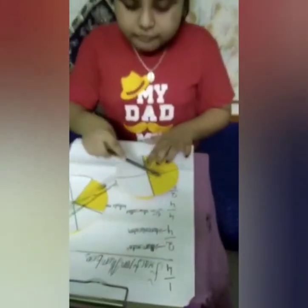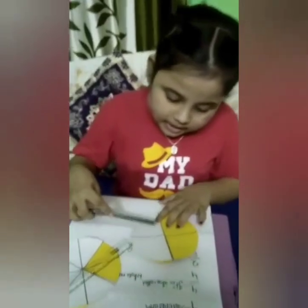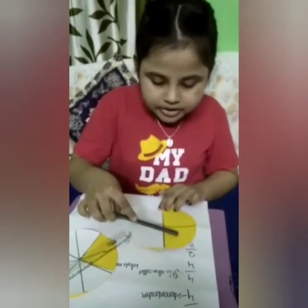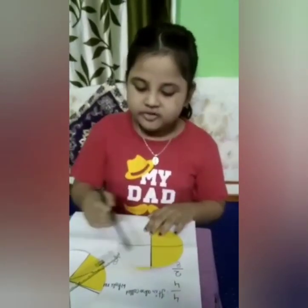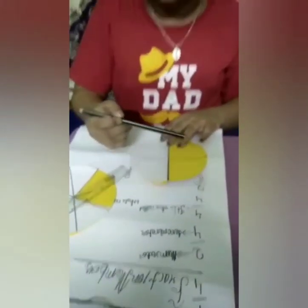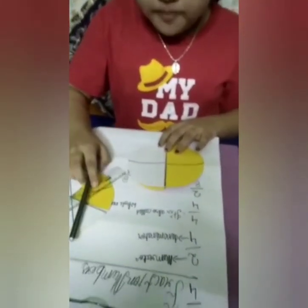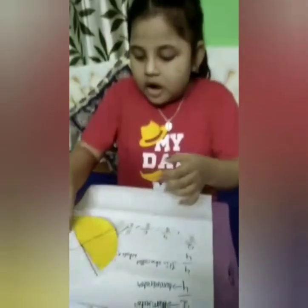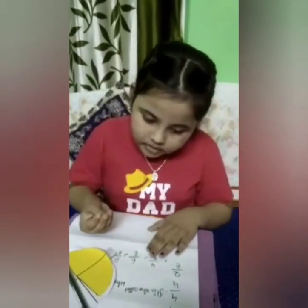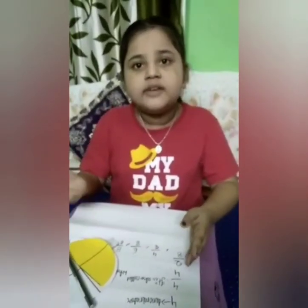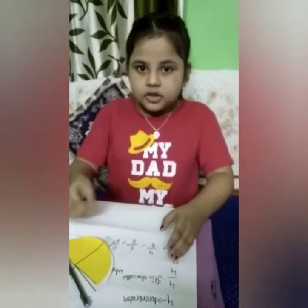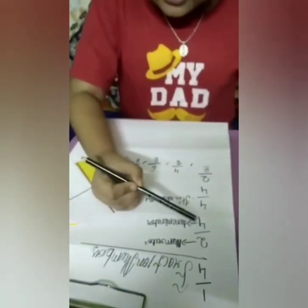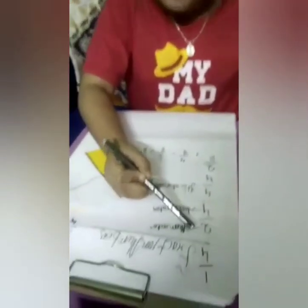We can see that it is a circle shape. In the circle shape there are 1, 2, 3, 4 parts. In the 4 parts, 1 and 2 parts are colored. So the answer will be 2 by 4. Now, how will we know what is numerator and what is denominator? The lower number is called the denominator and the upper number is called the numerator.